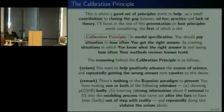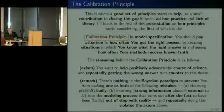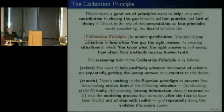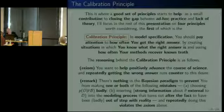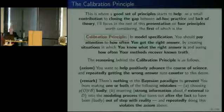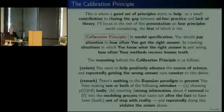The calibration principle says: in model specification, I should pay attention to how often I get the right answer, because that's a basic scientific imperative. A good way to do that is to create situations in which I know what the right answer is and then see how often my methods recover known truth. An example of this was exactly the Brown and Draper paper, where we created a simulation world, knew the right parameter values, generated data from a particular known mechanism, and noticed that the quasi-likelihood methods were very badly out of calibration, whereas the Bayesian methods were well calibrated. The reasoning behind the calibration principle is this new axiom: each of us wants to help positively advance the course of science, and repeatedly getting the wrong answer runs counter to that desire.